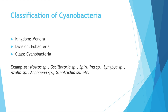Classification of Cyanobacteria: Cyanobacteria is also known as blue-green algae. Kingdom is Monera, division is Eubacteria, class Cyanobacteria. A few examples of Cyanobacteria are Nostoc, Oscillatoria, Spirulina, Lynbya, Azolla, and Anabaena.